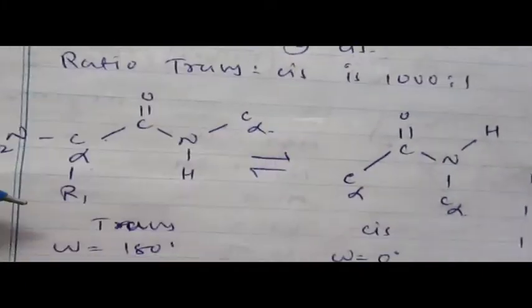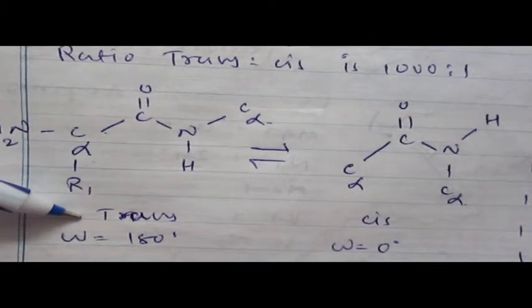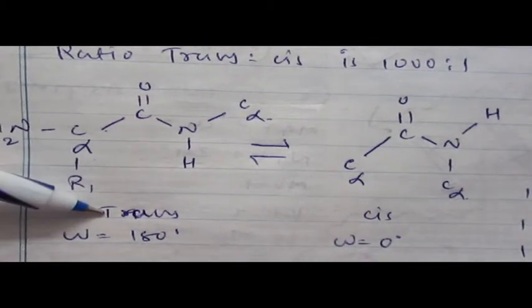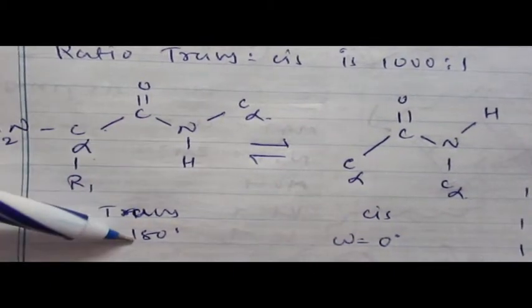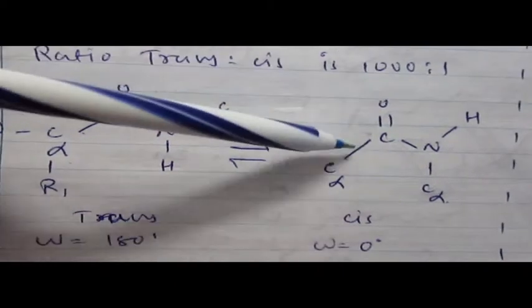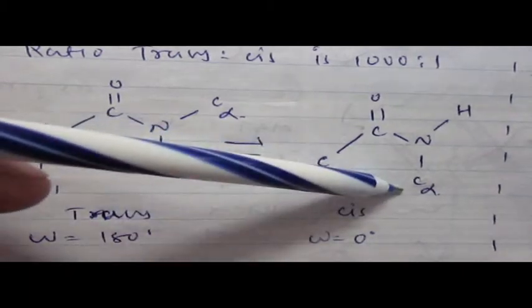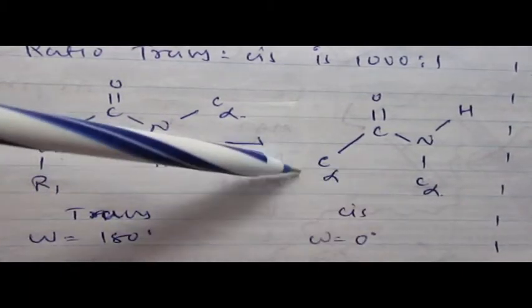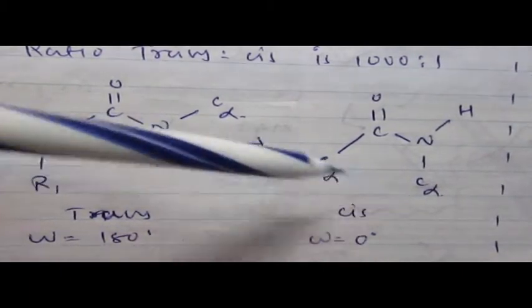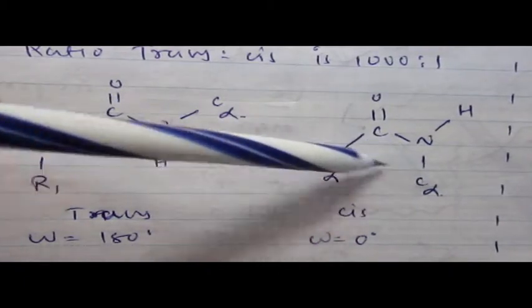Trans is sterically allowed and the most favored conformation of peptide bond. The angle of rotation in trans configuration is 180 degrees, whereas the angle of rotation in cis configuration is 0 degrees, where both C alpha carbons are present in the same planar.